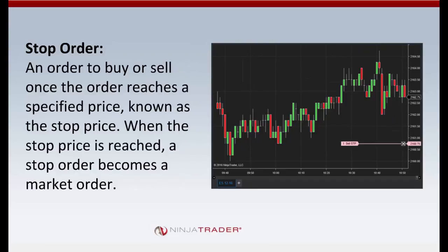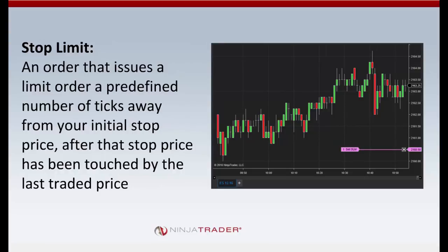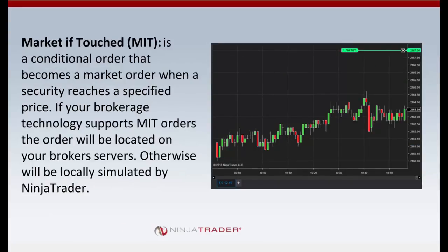A stop market order is an order to buy or sell once the price reaches a specified stop price. When the stop price is reached or surpassed, it becomes a market order, ensuring a greater probability of execution at a predetermined entry or exit price, limiting losses and locking in profits. A stop limit order is similar, except when the stop price is met or surpassed, a limit order is issued a predefined number of ticks away from the stop price — combining features of both stop and limit orders. An MIT (Market If Touched) order is a conditional order that becomes a market order when the security reaches a specified price; if your brokerage supports MIT orders they reside on the broker's servers, otherwise they are locally simulated by NinjaTrader.